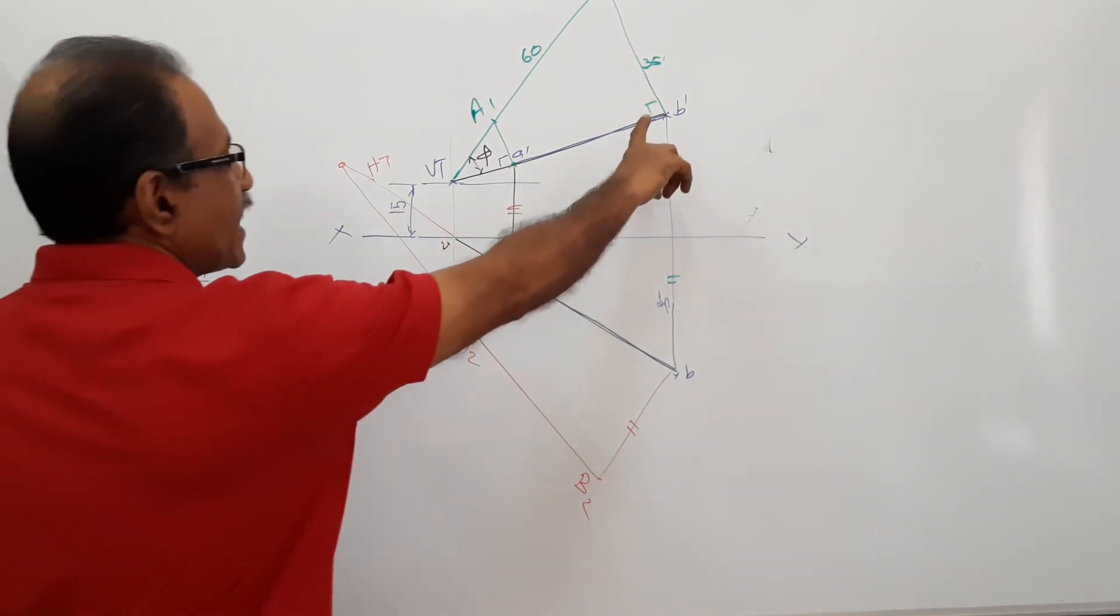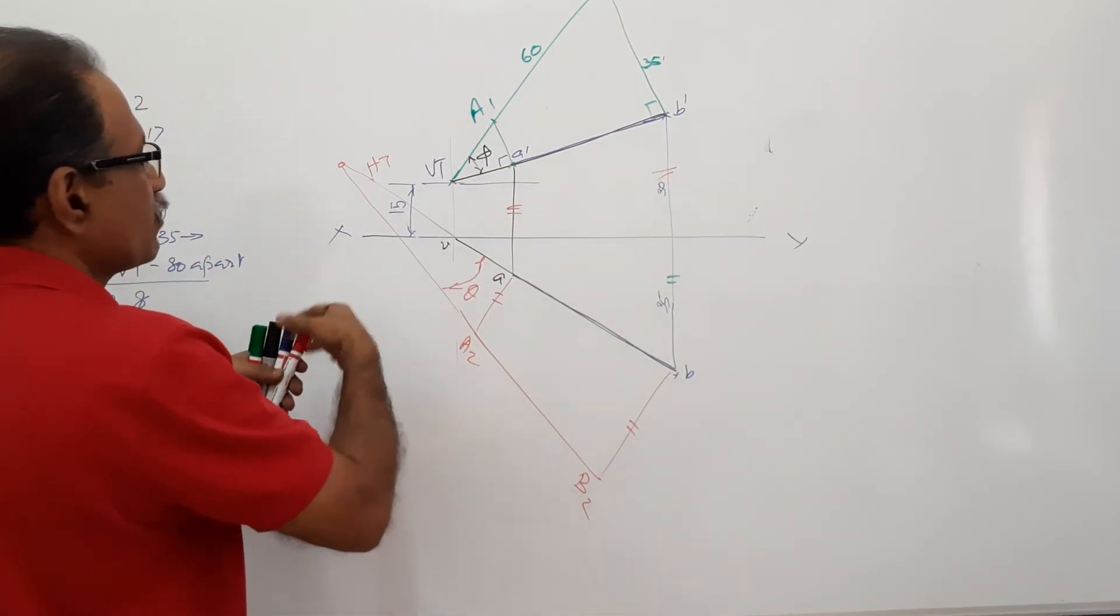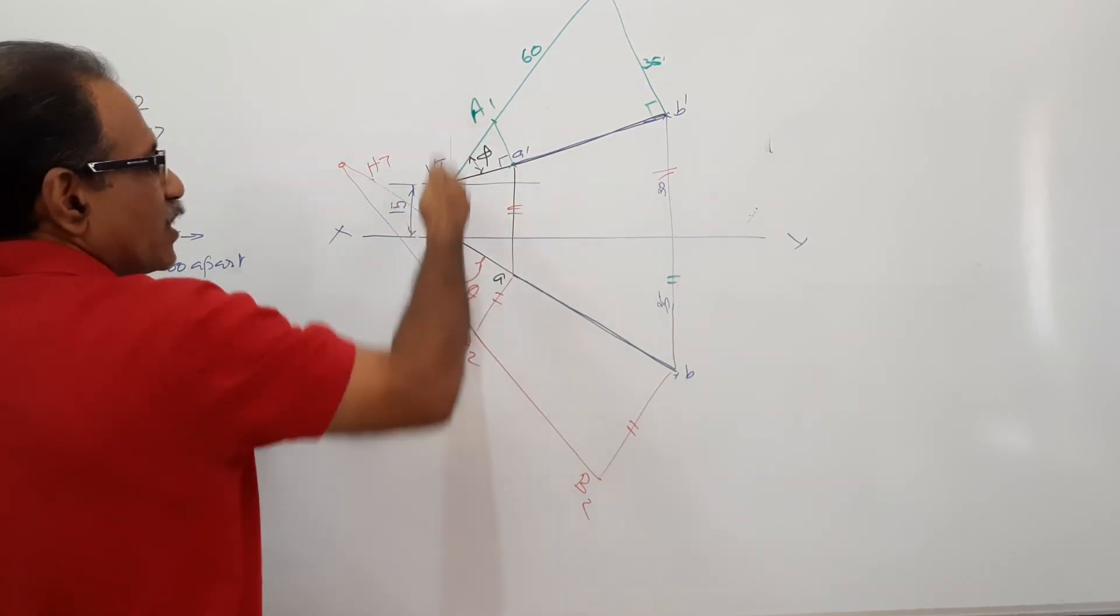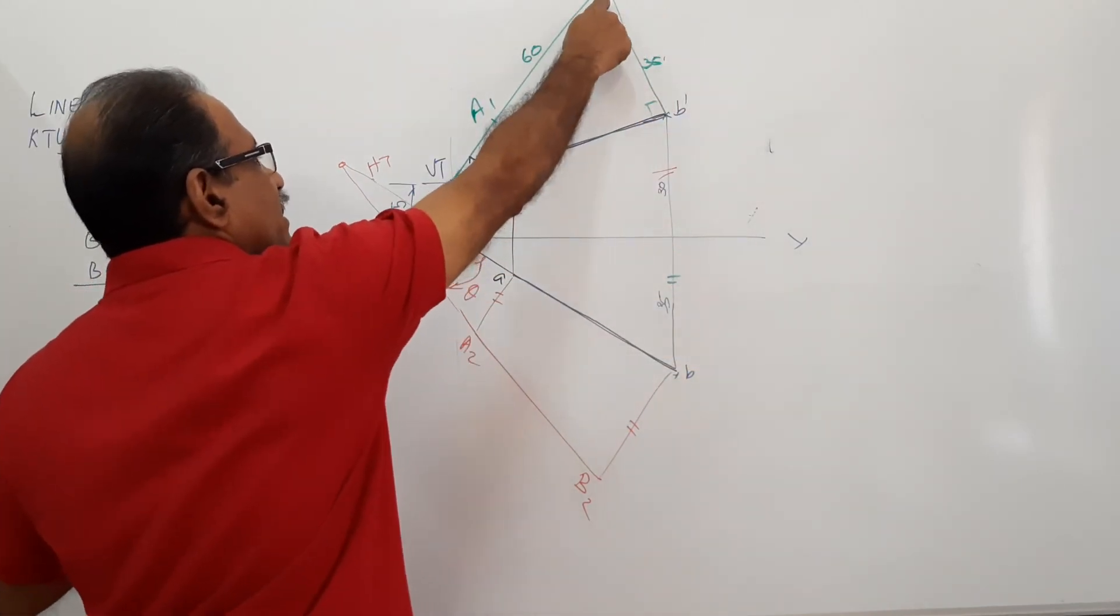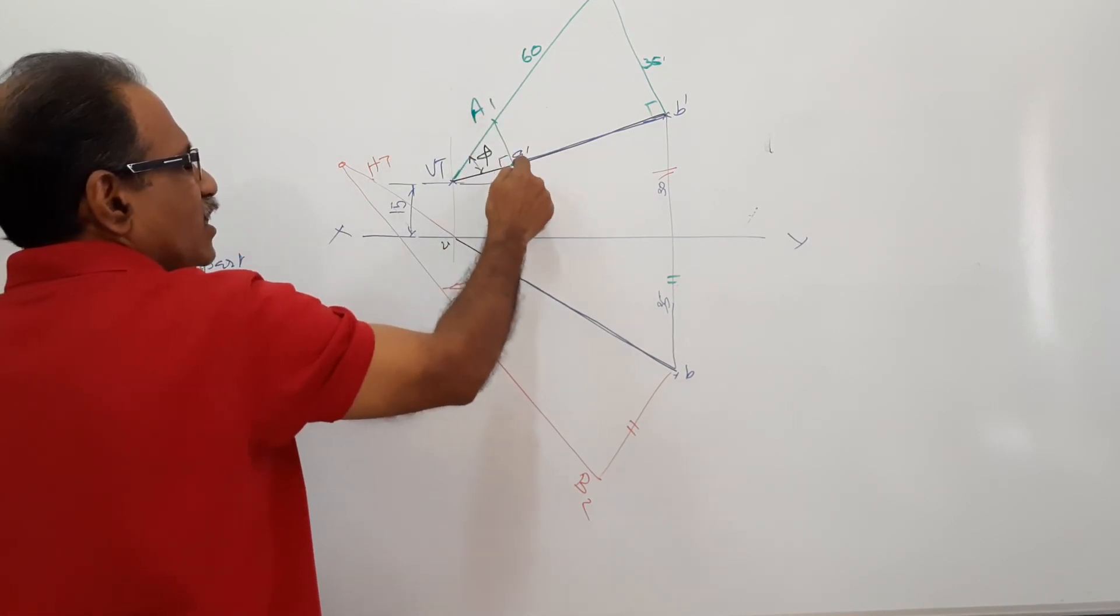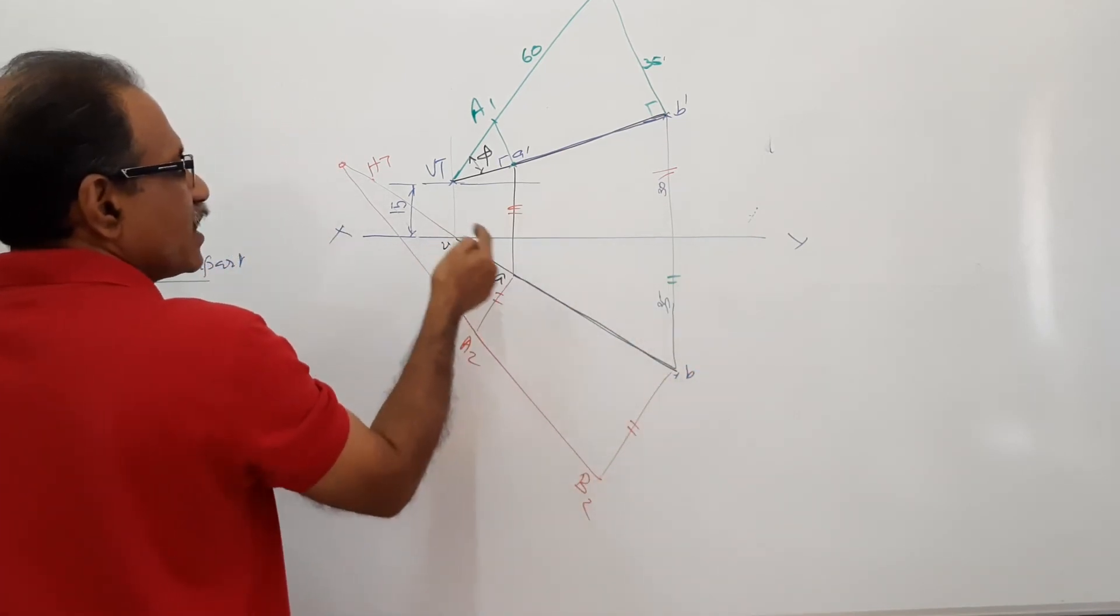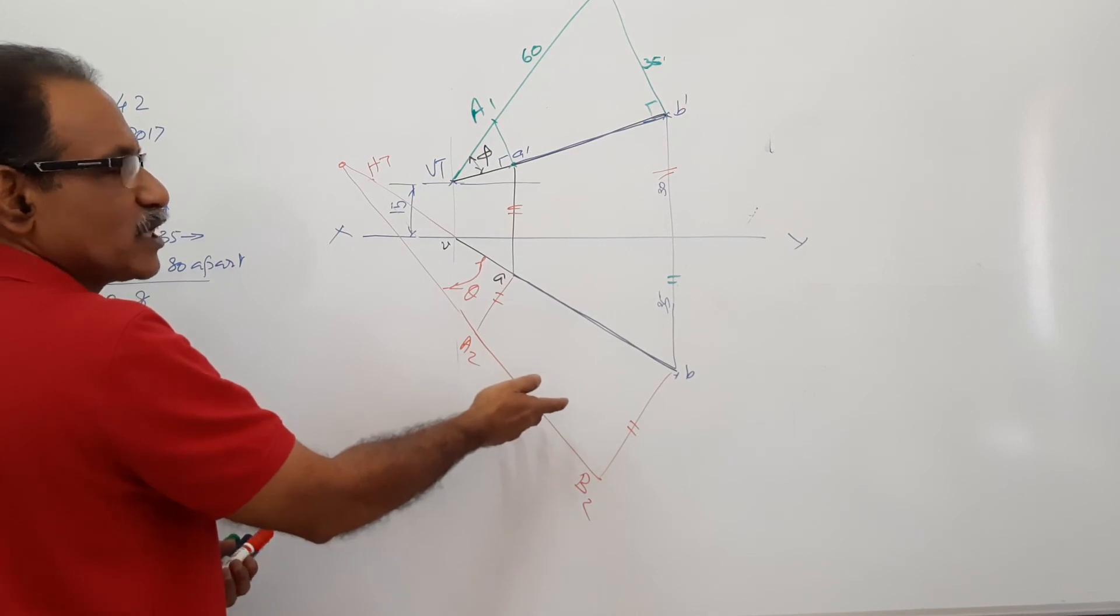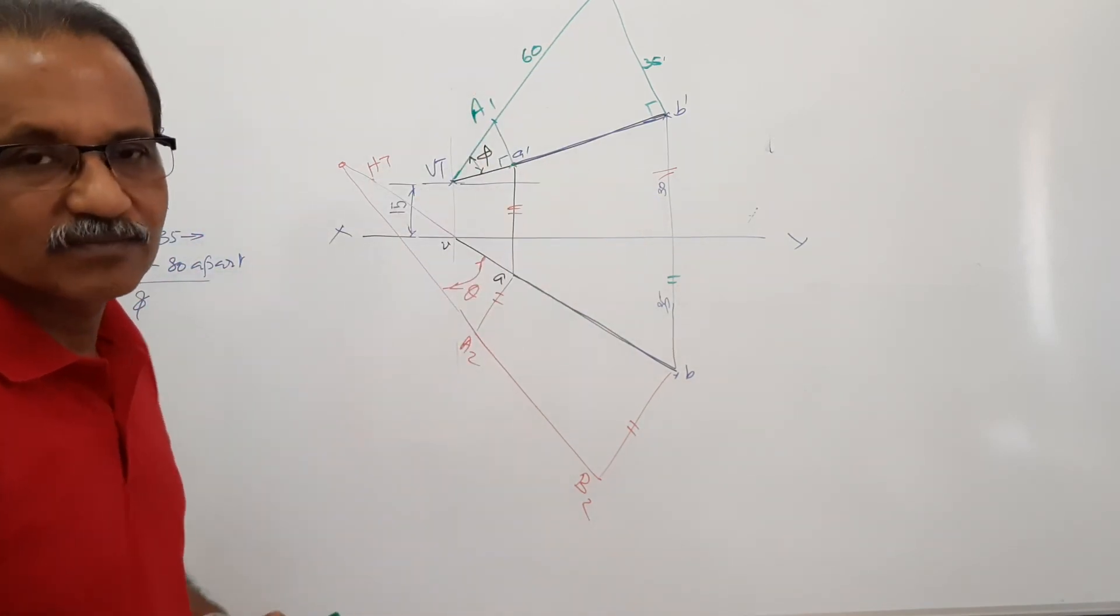First of all, we locate B dash and B. Then we locate 80mm away, draw a projector. You get VT. Join B dash to VT. Drop a perpendicular there. Take out the 35mm mark to capital B1. Capital B1 and VT can be connected. On that line is true length. Measure from B1 to 60mm and get A1. Drop a perpendicular. A dash to B dash is the elevation. Drop it down. Locate B. Connect B to V. On that, you'll get A. A, B is the plan. A dash B dash is the elevation. Phi you have already obtained. Theta can be obtained here by trapezoidal method. Or you can make the plan parallel to XY. You'll get theta in the elevation. Thank you.